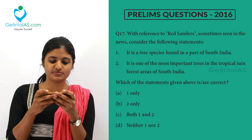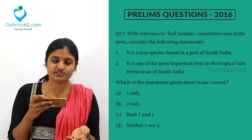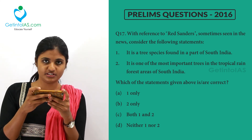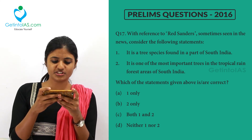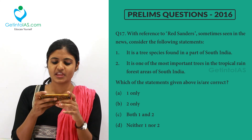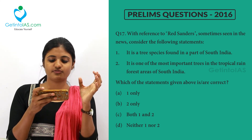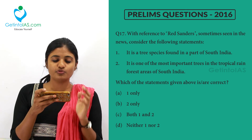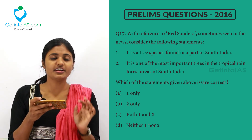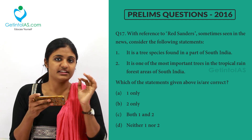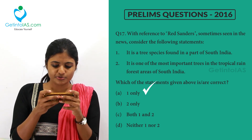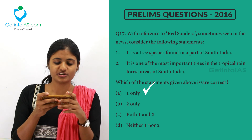With reference to red sanders (red sandalwood): the first statement — that it is a tree species found in part of South India — is correct, as it is mainly found in the Andhra Pradesh region. The second statement — that it is one of the most important trees in the tropical rainforest areas of South India — is wrong, because red sanders belong to the deciduous dry forest, not the tropical forest. So option A (1 only) is the correct answer.